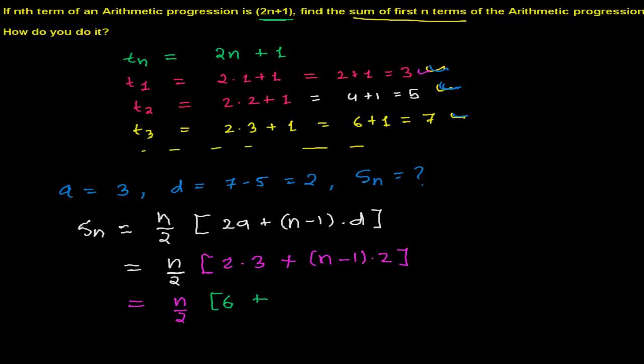And then n minus 1, this 2 will multiply this n, you will get 2n, and this 1 will multiply by this 2, so you will be getting minus 2. And in the next step, what you can write: n by 2 times whatever you have, 6 minus 2 that will be 4 plus 2n.